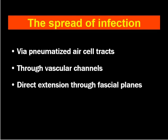How does the infection spread from the middle ear to the petrous apex? Via pneumatized air cell tracts, through vascular channels like perivascular spaces of Virchow-Robin, and occasionally by direct extension through the fascial planes.